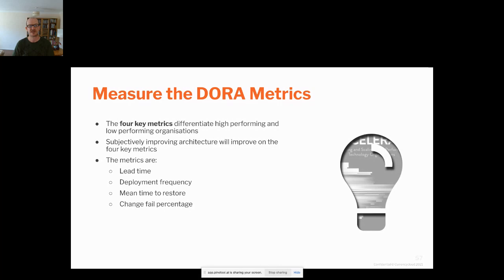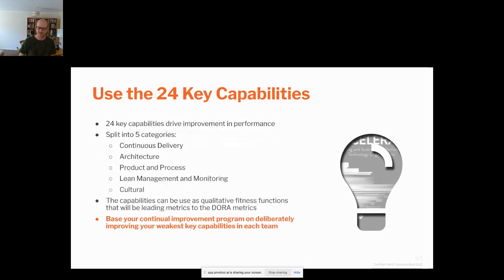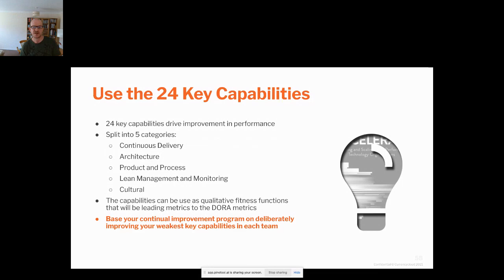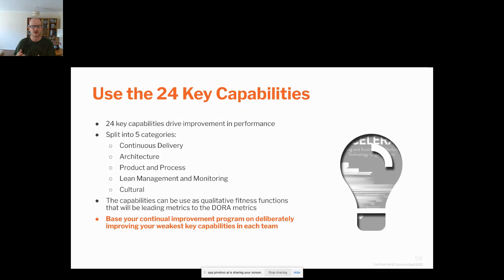If you work on improving those metrics you will most definitely improve your architecture. Conversely, if you improve your architecture you'll improve your performance in those metrics. But they are lagging metrics — they tell you what happened. Accelerate also tells us there are five categories of capabilities with 24 capabilities in total: delivery, architecture, product and process, lean management and monitoring, and cultural. You can create qualitative fitness functions against each of those 24 things and use those as leading indicators. Better still, build a continual improvement program where all your teams, every iteration — maybe every two weeks — pick the one they think they're weakest in and pull out one story to add to their backlog that will improve their performance in that area. That gives you a deliberate continual improvement program that will constantly improve your architecture, and over time your architecture will be provably better than it was. That is great architecture.